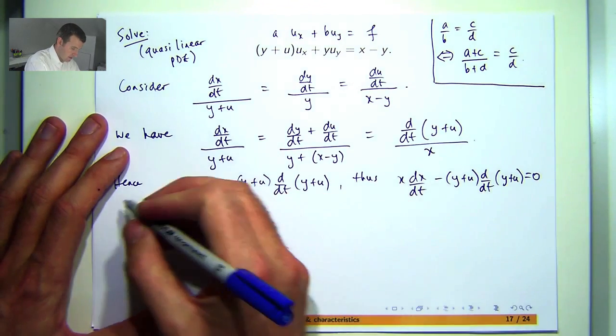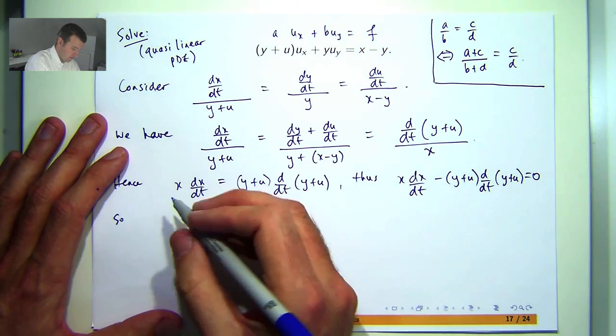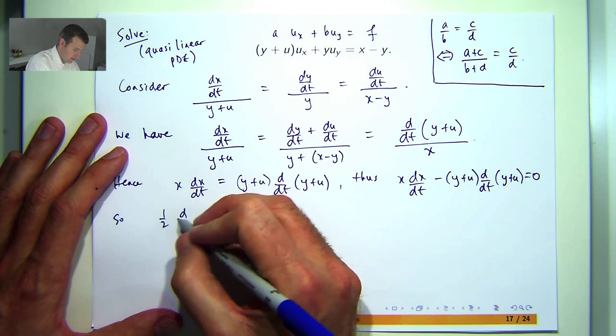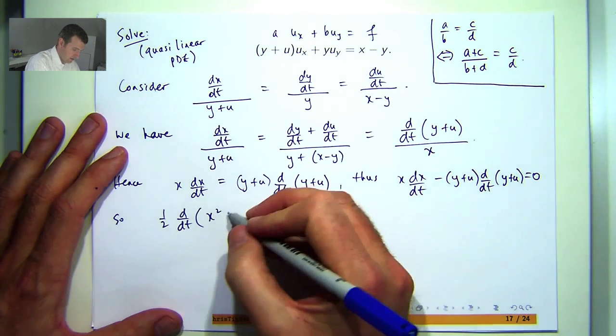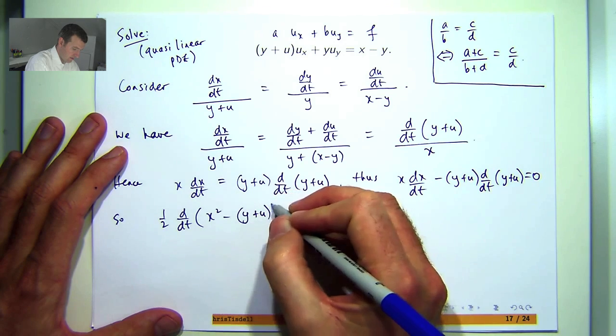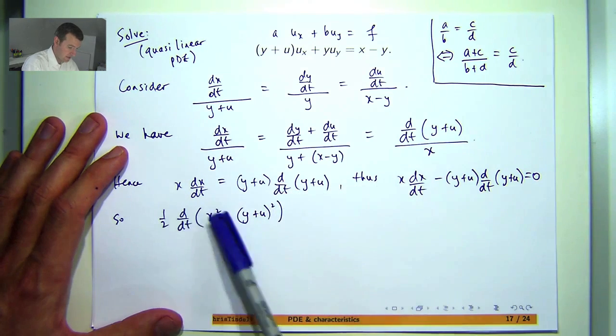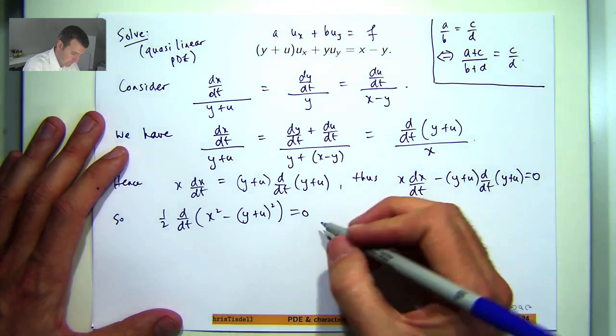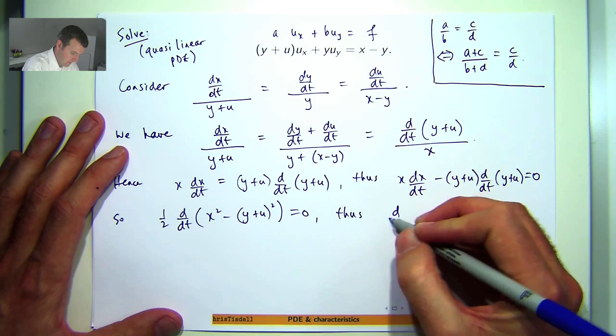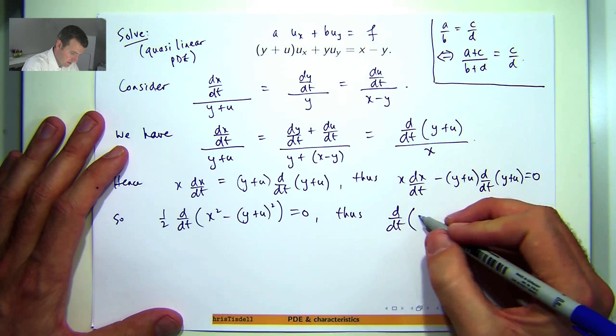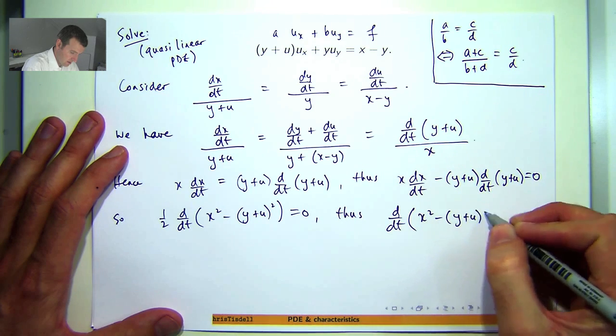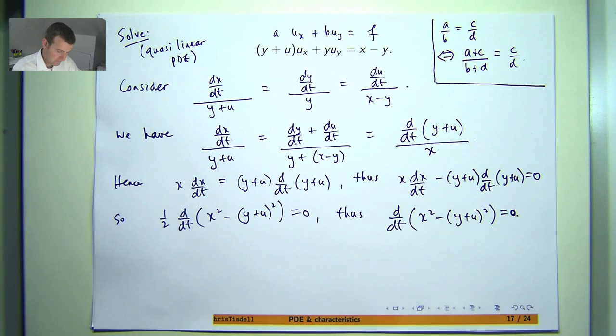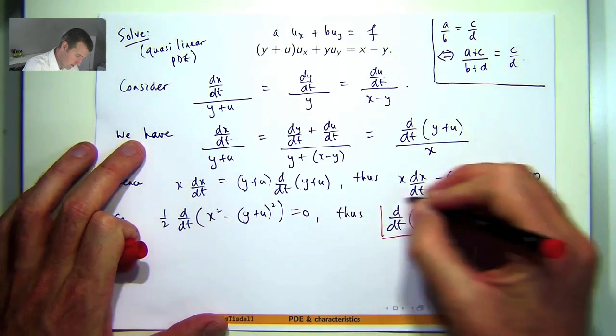Now, what is this? This is just a half of the derivative of x squared. And this is the same principle here. This is half of the derivative of y plus u all squared. So, we have the following. You can check this just by differentiating it. Well, who cares about the half? And I get the following.